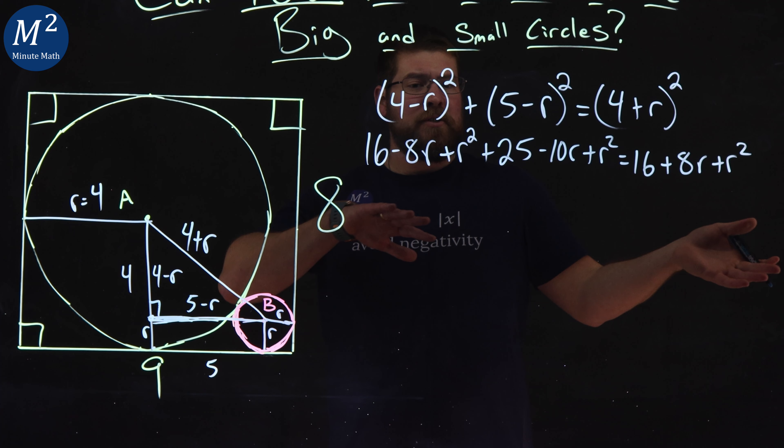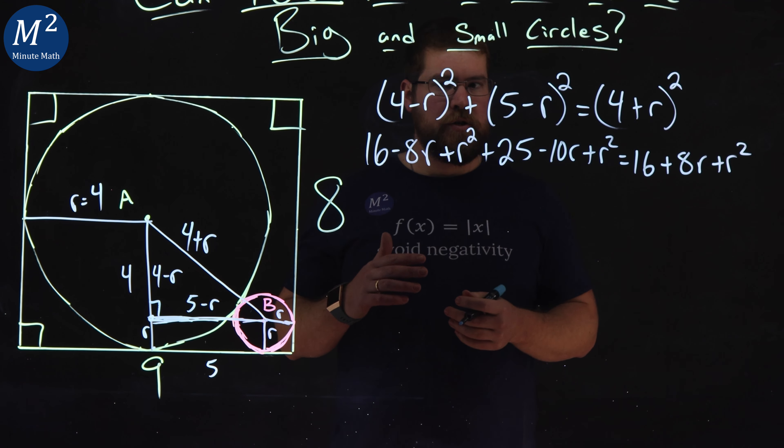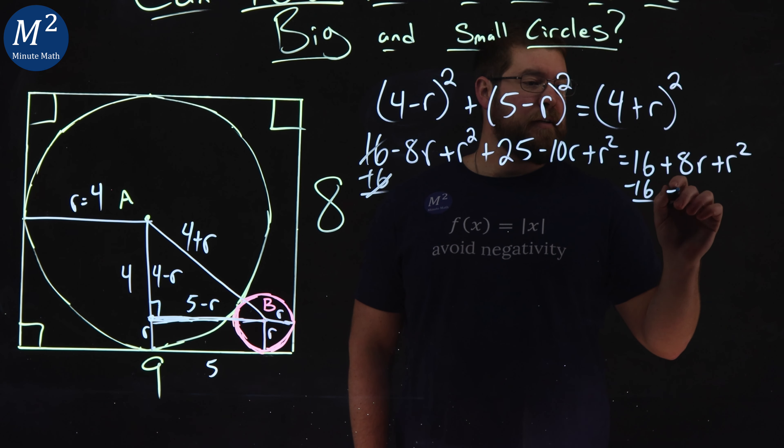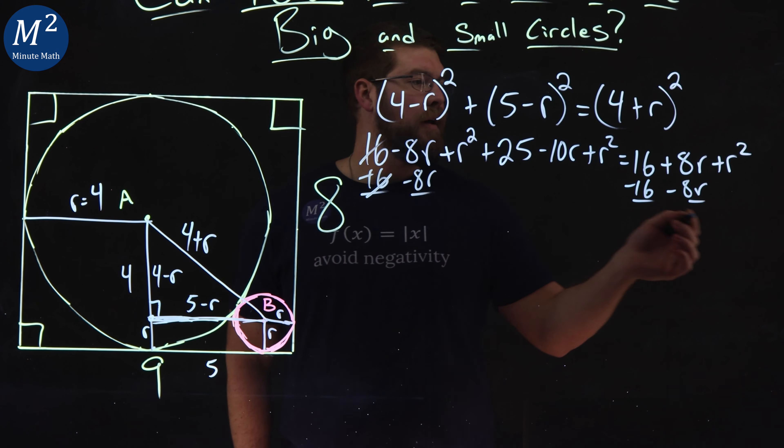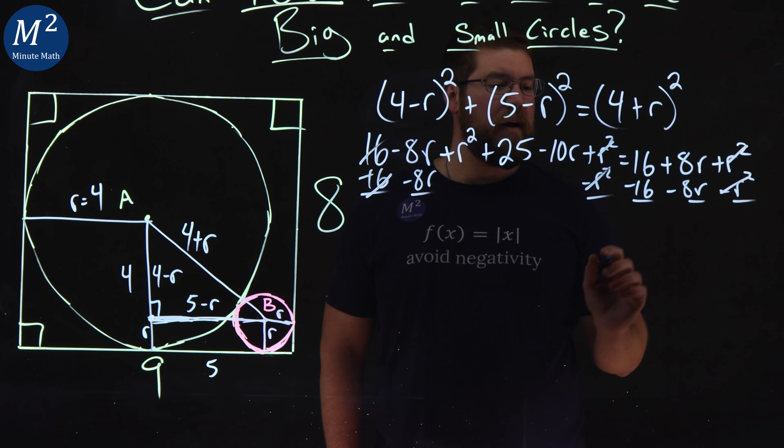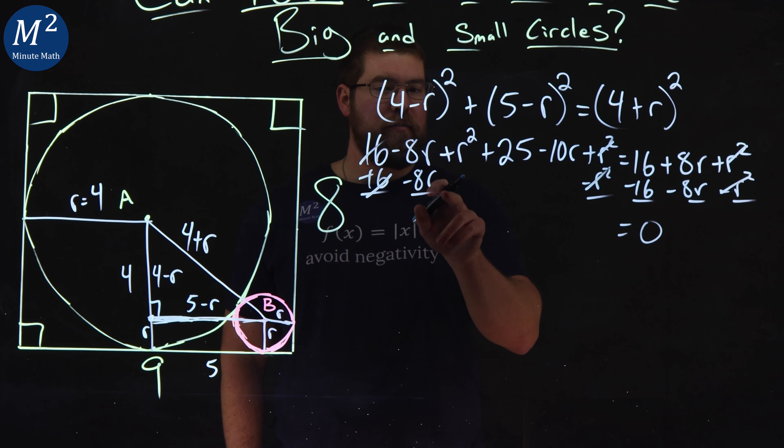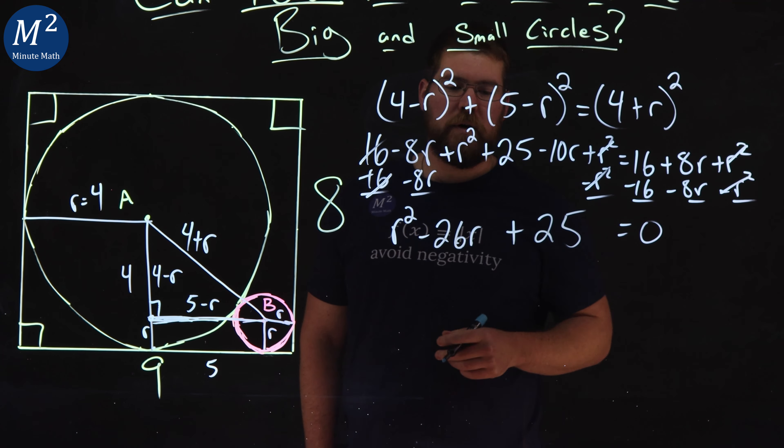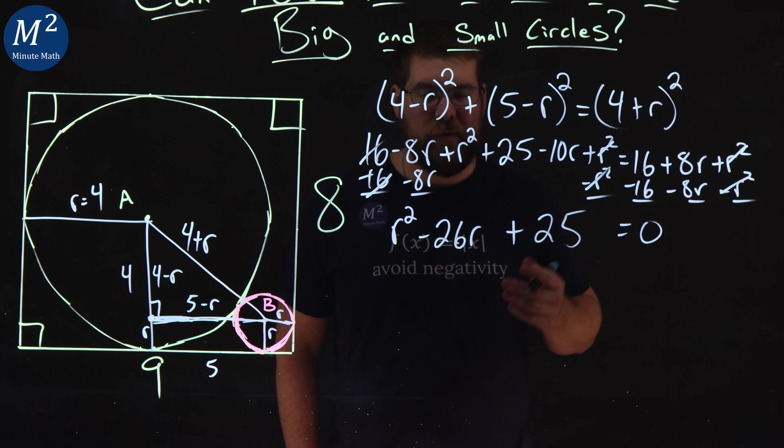All right, we're going to combine all of our like terms, bring everything over to the left, and we'll see what we can do. Subtract 16 from both sides right here, they cancel out. Combine like terms, minus 8R right here, and minus R squared. Oh, R squared's cancelled. That's always nice. We have zero on the right. On the left, let's bring R squared first. We have R squared here. Negative 8R minus 8R is negative 16R plus that 10R is minus 26R. Got all that. And then the 25. So we have R squared minus 26R plus 25 equals zero.